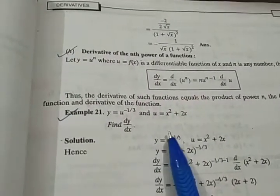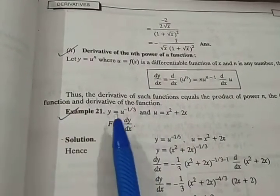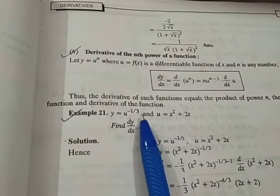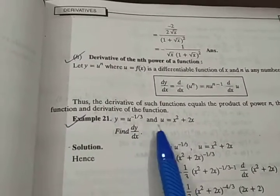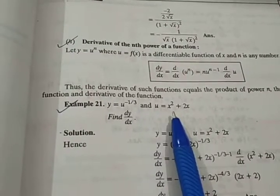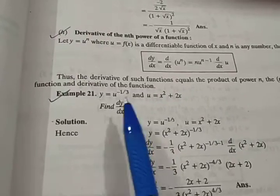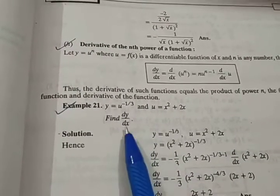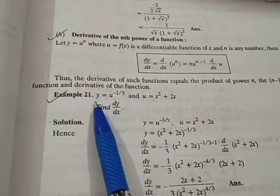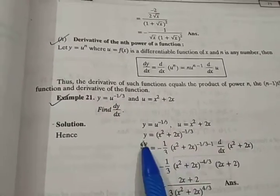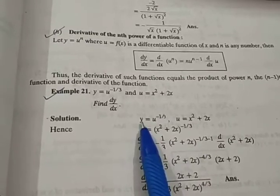So to solve this, let's take an example which you will find that you have already done. y is equal to u raised to power minus 1 by 3. And u is equal to x square plus 2x. And you are to find the derivative. So dy by dx you have to find.